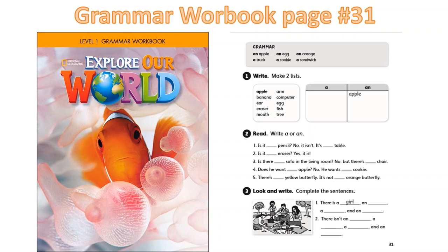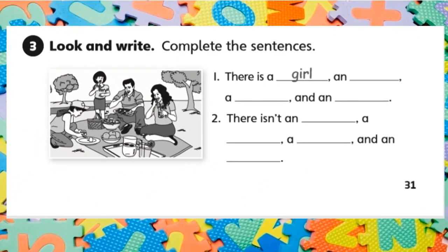Now please open your grammar workbook in page number 31. It says look and write, complete the sentences. So we have a picture here and it says there is a girl and, what else do you see? We use an before a vowel. For example, we can write orange, an orange. There is an orange in the picture, right? There is an orange. What else? Now we have a boy. Boy starts with a consonant. We use a before a consonant. Utilizamos a antes de una consonante y an antes de una vocal.